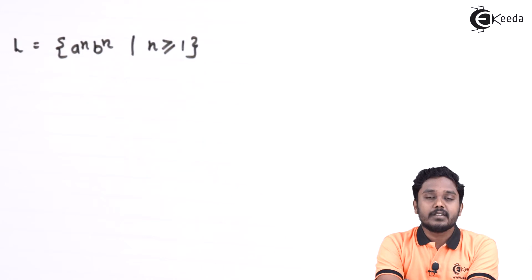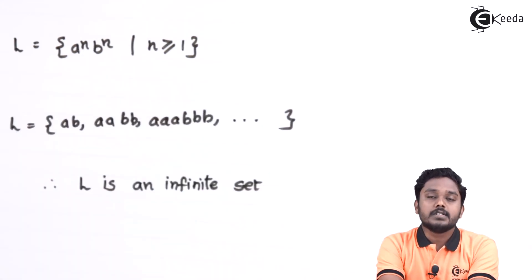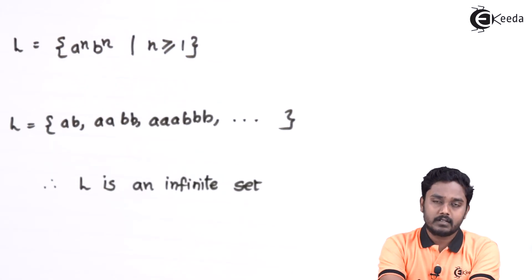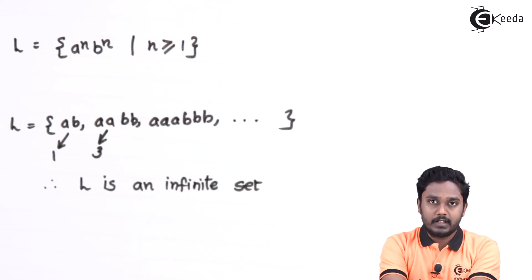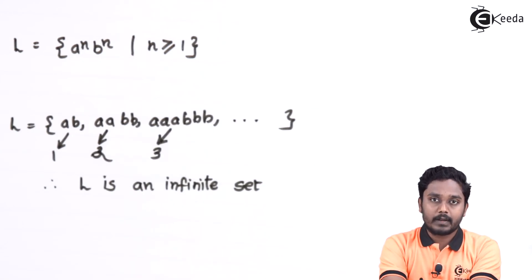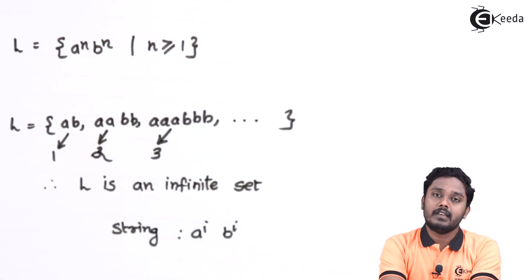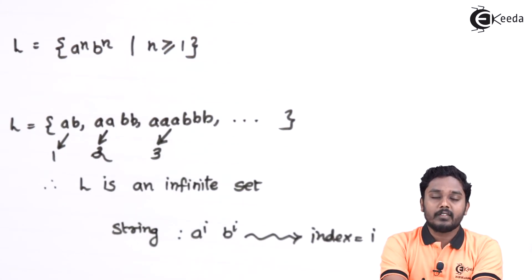The language L contains the set of all strings of the form a^n b^n where n is greater than or equal to 1. Is this set countable? Can we index every element? Yes — the string 'ab' gets index 1, 'aabb' gets index 2, 'aaabbb' gets index 3, and so on. For any string a^i b^i, the index is simply i. Since we can index every string in this language, we say that this language is countably infinite.